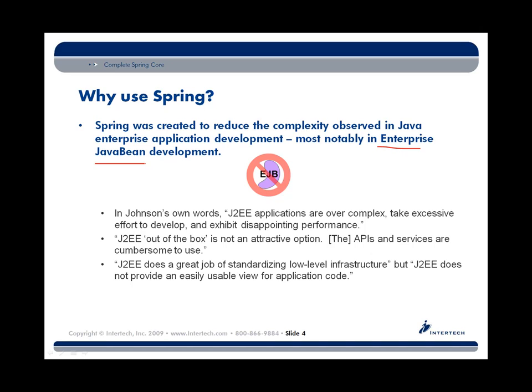The name Spring Framework, and in particular Spring Beans — which really make up a large portion of the Spring Framework — has a name that is parallel to the name Enterprise Java Bean, both containing that Bean name for a reason. Mr. Johnson felt that there really needed to be a better and improved way of building applications, a better Bean environment. And so Spring tries to do that. In his own words, Mr. Johnson said that Java Enterprise applications are overly complex and take a lot of time to develop.